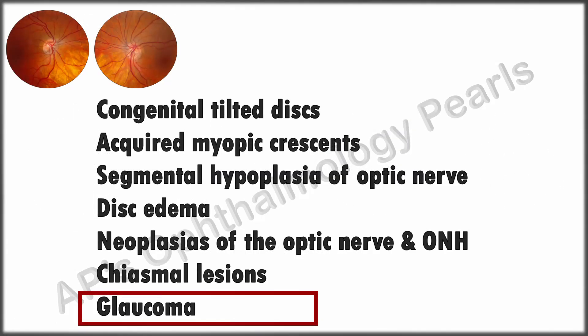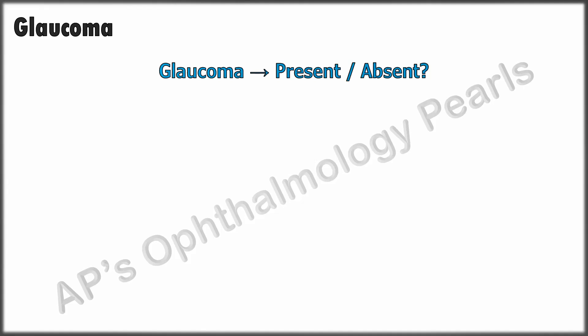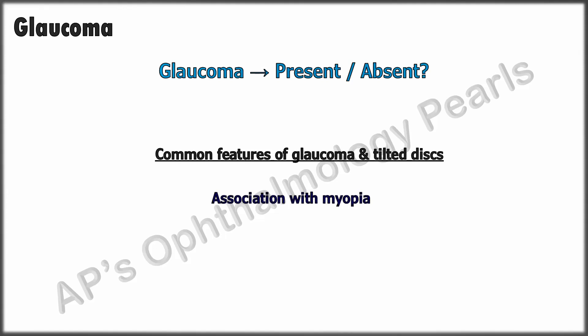Though there is no association between tilted discs and susceptibility to glaucoma, assessing for glaucoma in a patient with a tilted disc can be challenging — our patient is a typical example, more so since she has a family history of glaucoma. Both conditions share commonalities such as association with myopia, vertically oval disc, and peripapillary atrophy. Because of the intrinsic distortions in tilted discs, assessment for focal notching, cup size, nasal displacement of vessels, and neuroretinal rim is difficult.